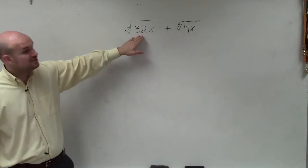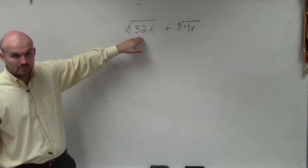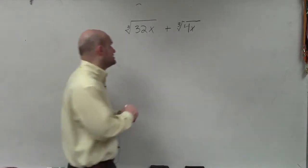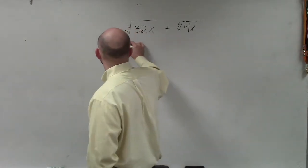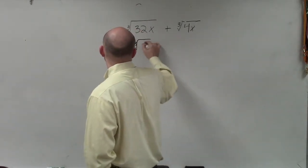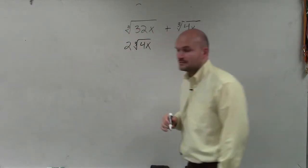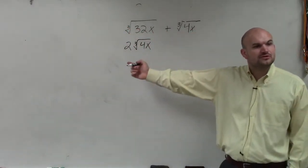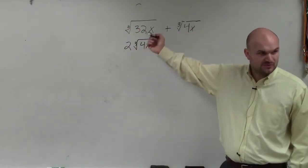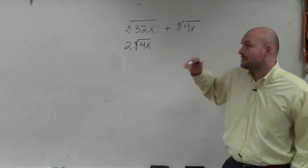However, as we've already worked out in this class, you can take the cube root of 32, which since I already showed in class, I will just show it's going to be 2 cube root of 4x, right? Because 2 times 2 times 2 is 8, and 8 times 4 is 32. So we already did this example in class.